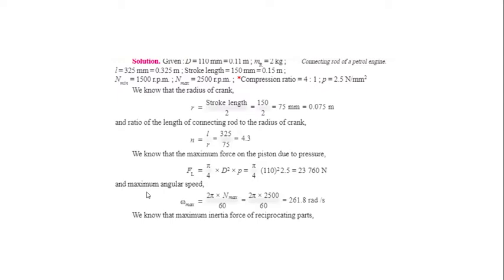Maximum angular speed: ω_max = 2πN / 60. Since we need the maximum condition, we substitute the maximum speed. So ω_max = 2π × 2500 / 60. Simplifying, we get ω_max = 261.8 rad/s.